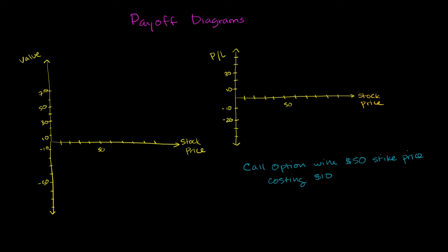If we're the owner of a call option with a $50 strike price, then the payoff at expiration - we're just talking about the value of that position. If the stock is below $50, we wouldn't exercise it, because we can buy it for cheaper than the call option is giving us.